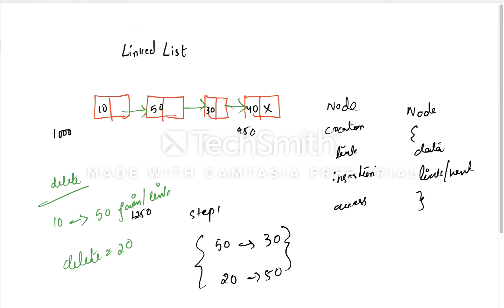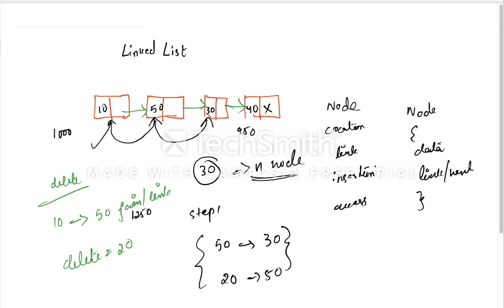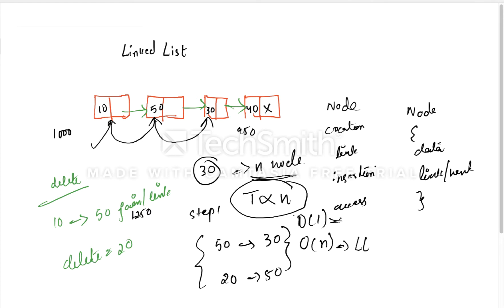So here we have time complexity. Suppose we search for the 30th node - time complexity is proportional to number of nodes. Comparing to arrays: array random access time complexity is O(1), but linked list search time complexity is O(n). So linked list has no random access - this is the major difference and the negative of linked list.